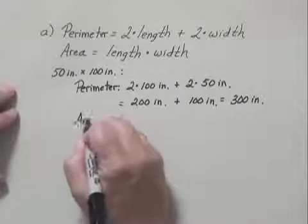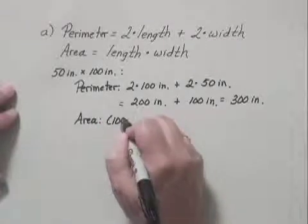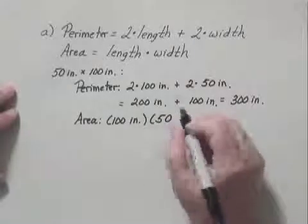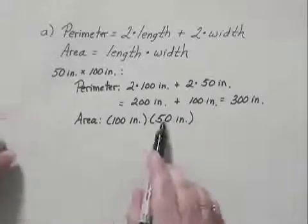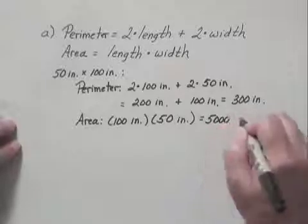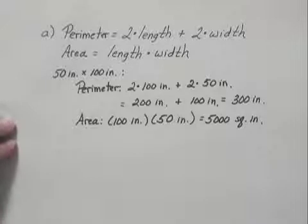And then we find the area. The area is the length, 100 inches times the width, 50 inches. 100 times 50 is 5,000, and that gives us 5,000 square inches. That's the first table.